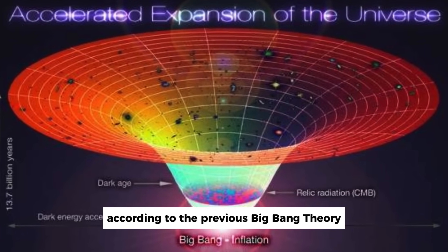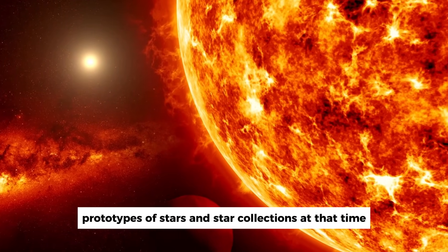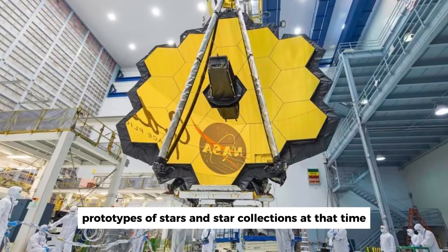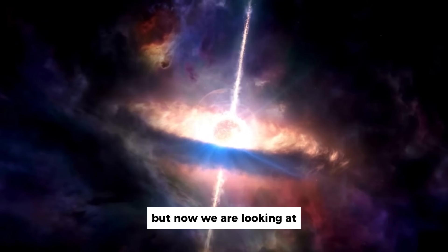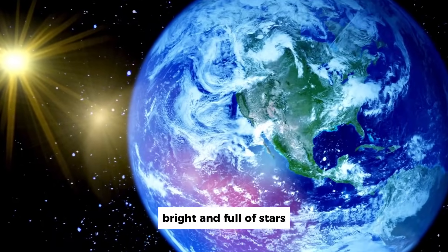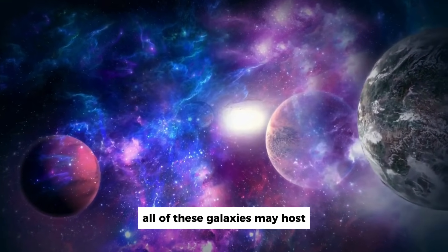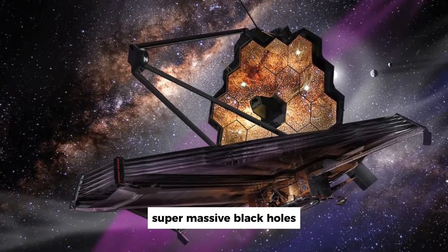Imagine that, according to the previous Big Bang theory, there should have been actually only first prototypes of stars and star collections at that time. But now we are looking at six galaxies that were massive, bright, and full of stars. And at their centers, all of these galaxies may host supermassive black holes.